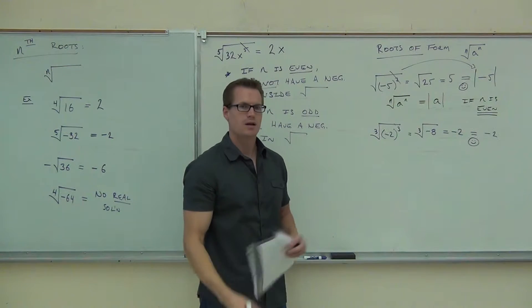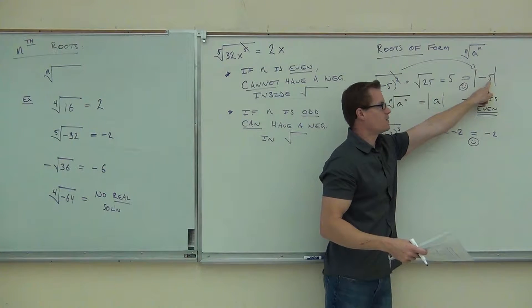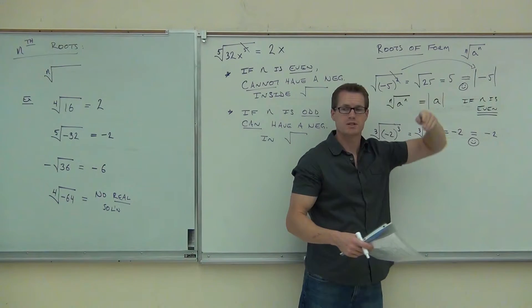Getting the absolute value of a, not just a. Because we know that here our a is negative 5, we're not just getting negative 5, we need to be getting positive 5. We're going to take the absolute value of that.